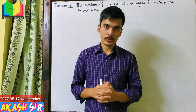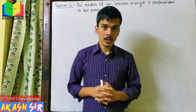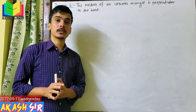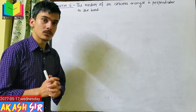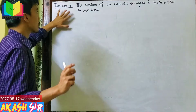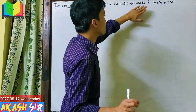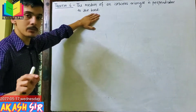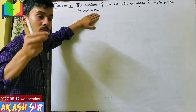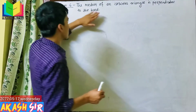Hello everyone, welcome to our new video. Today is Class 10 Vector Geometry, Theorem 6. We will solve and prove the theorem. Theorem number 6 is the triangle basis theorem: the median of an isosceles triangle is perpendicular to the base. We will prove vectorically that the median of an isosceles triangle is perpendicular to the base.